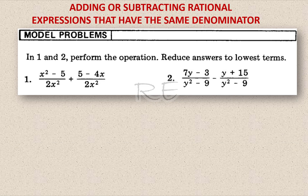x squared minus 5 over 2x squared, plus 5 minus 4x over 2x squared. The denominators are the same, so we add the numerators: x squared minus 5 plus 5 minus 4x, divided by 2x squared.